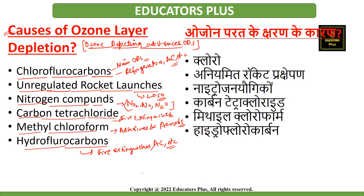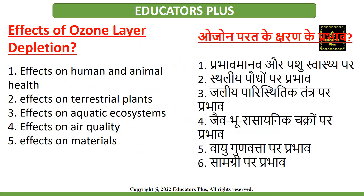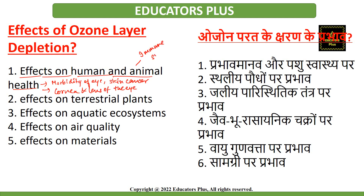When the ozone layer is depleted, UV radiation increases at the earth's surface. This can cause eye diseases, skin cancer, and other infectious diseases to humans as well as animals. UV radiations damage the cornea and even the lens of the eye. If the ozone layer is depleted, humans are directly exposed to harmful UV radiation, resulting in skin diseases, cancer, sunburns, cataract, quick aging, and a weakened immune system.